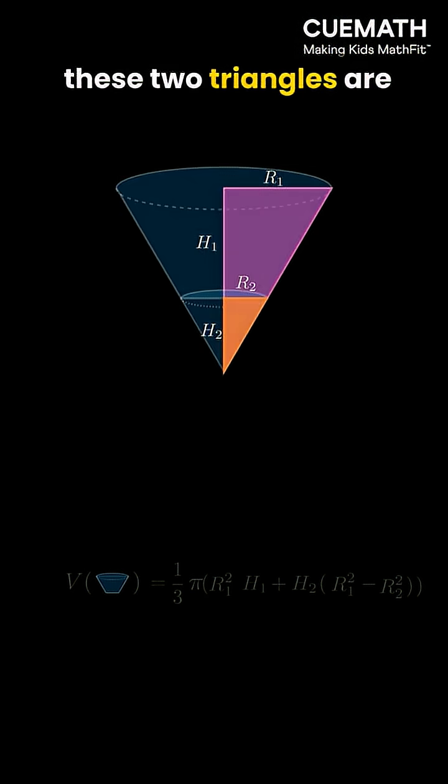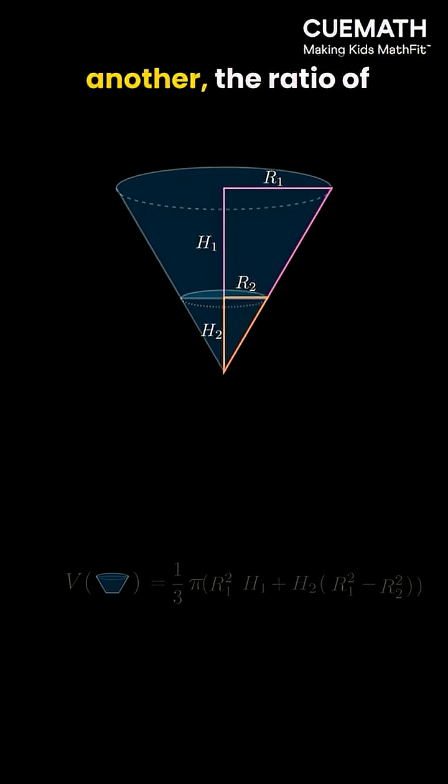Since these two triangles are scaled versions of one another, the ratio of their corresponding sides are the same.